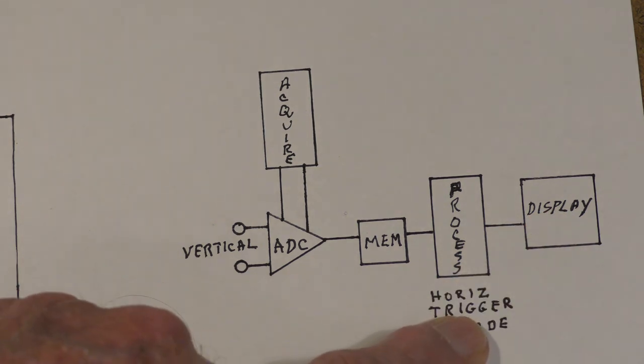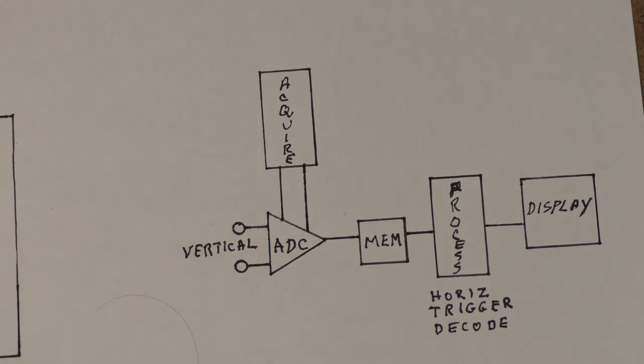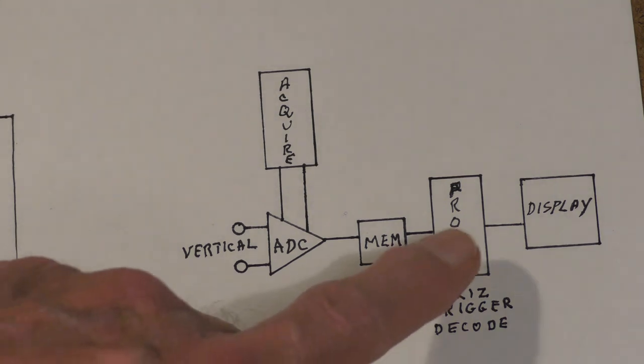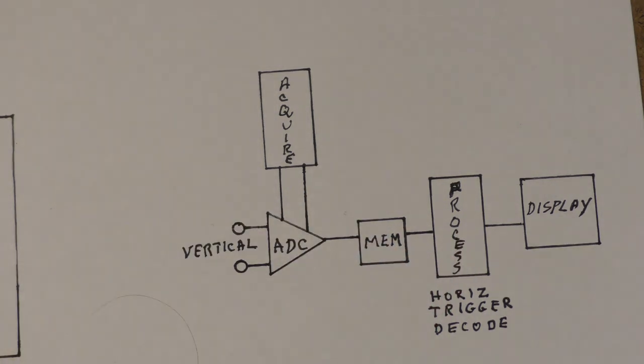Notice that there's no horizontal plates. There's no vertical plates. The processor simply puts dots on a screen. The trigger function is no longer really a trigger. It's really a compare function and we'll talk about that in just a second. And also all the other things that go on like decode and so on is all done in the processor looking at the memory.